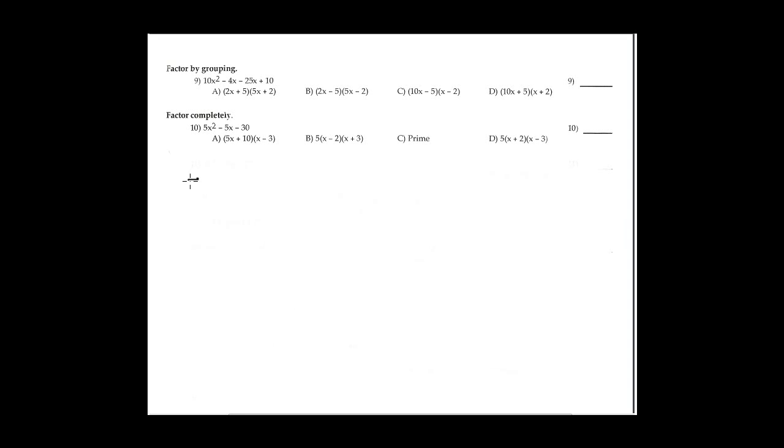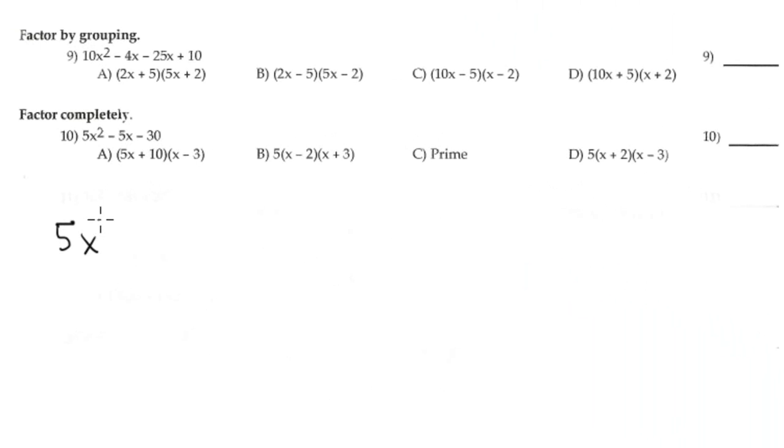Number 10 is factorization of a trinomial: 5x² minus 5x minus 30. First of all, is there a common factor? Yes, 5 is a common factor: 5 times (x² minus x minus 6).